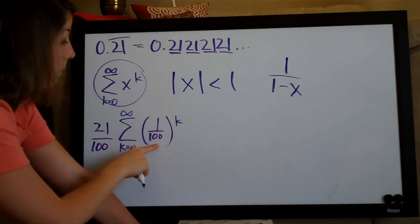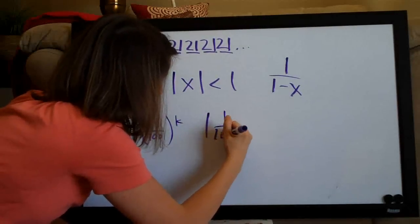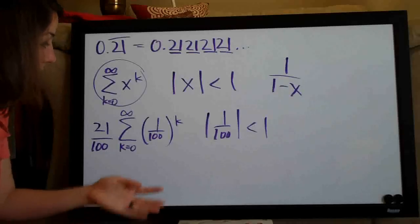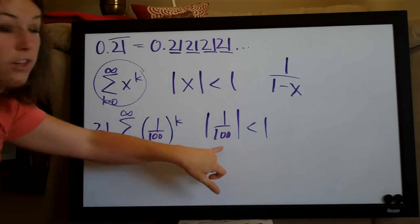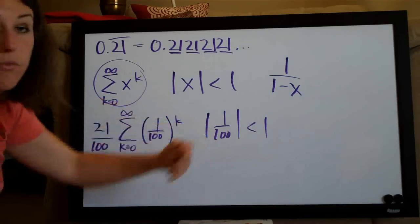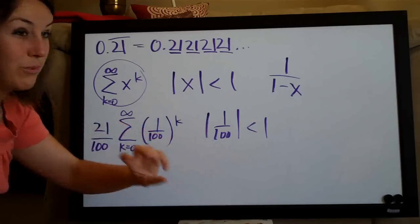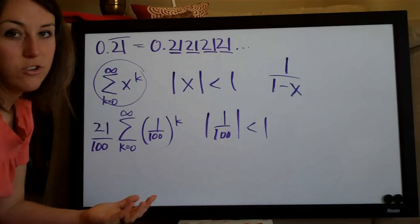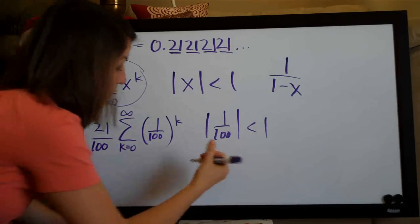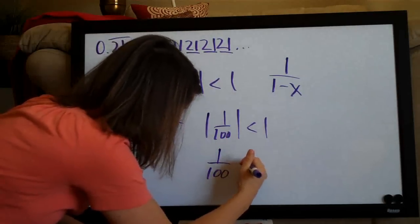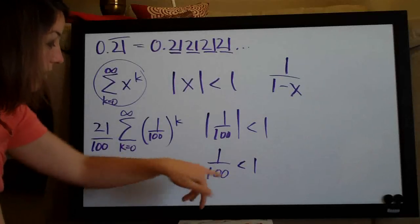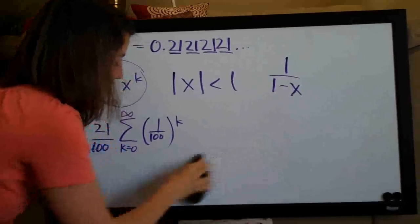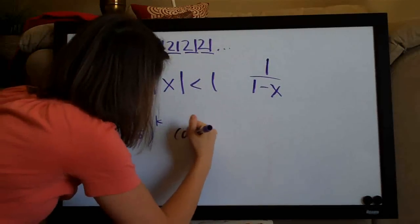If our x is one over one hundred, we plug that into the convergence condition. The absolute value of one over one hundred — since it's already positive, the absolute value brackets have no effect. The question is: is one over one hundred less than one? Of course it is. Since this is less than one, our series does converge.